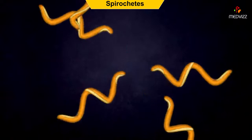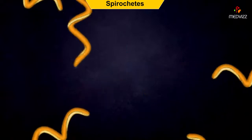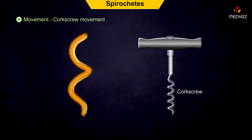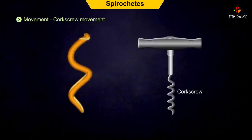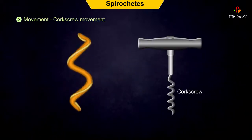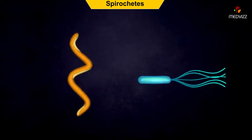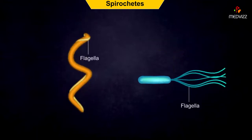Spirochetes are a group of bacteria that are spiral shaped. They move in a corkscrew-like fashion, using flagella that do not protrude from the cell wall like typical flagella.